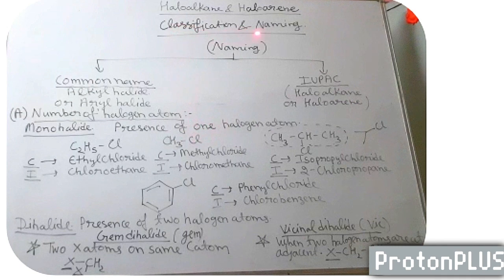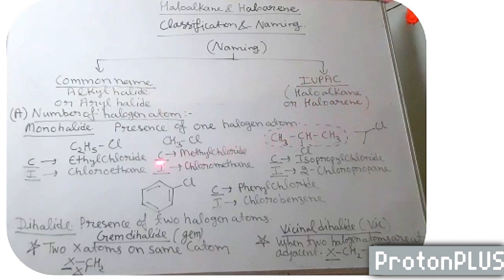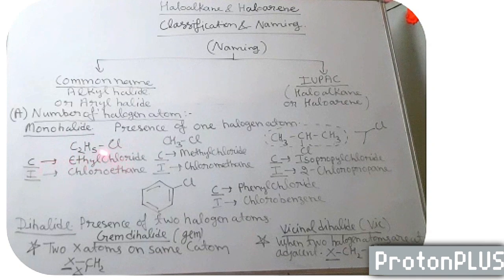Now we will start with the classification and naming of haloalkanes and haloarenes. Naming of haloalkanes and haloarenes: first, the common name, commonly known as alkyl halide or aryl halide. And IUPAC is followed by haloalkane or haloarene. As we have done with the first part of classification — number of halogen atoms — we will take examples. If one halogen atom is present, that is named as monohalide. For example, C2H5Cl — common name is ethyl chloride, an alkyl halide. And IUPAC name is chloroethane.